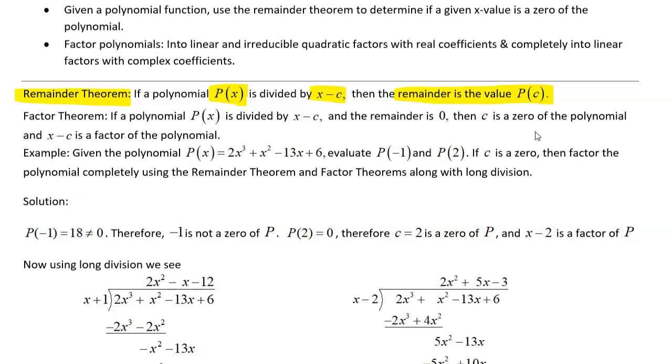Now what's really going to help us a lot is also this factor theorem, and that's telling us that if we take a polynomial and we divide it by x minus c and we get a remainder of 0, then c is a zero of the polynomial, and x minus c is a factor of the polynomial.